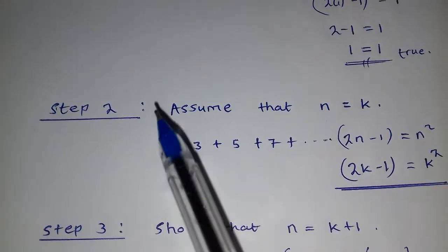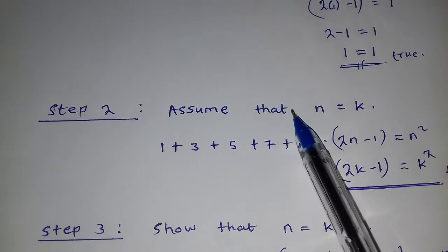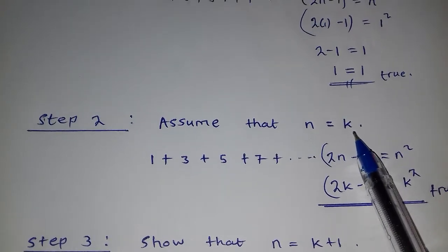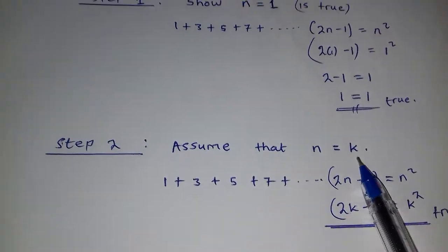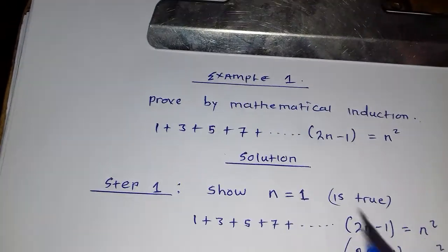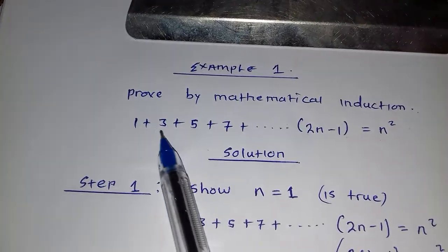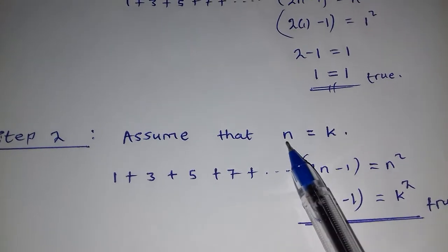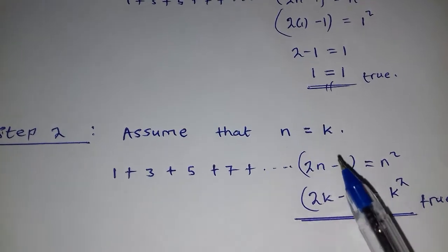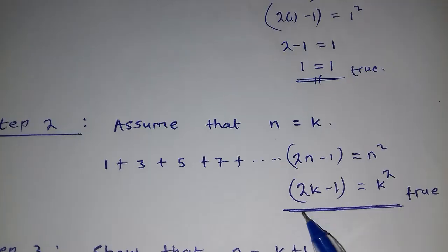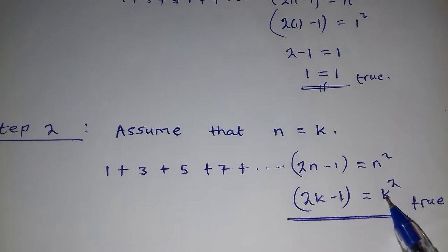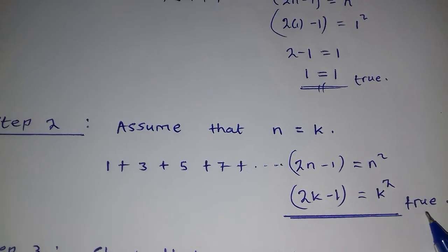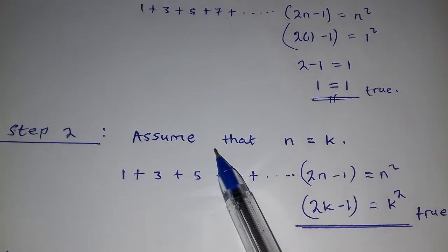Step number 2: assume that n is equal to k. This time around, we are not solving anything. We are just writing the same equation, replacing n with k. So we write: 1 plus 3 plus 5 plus ... plus (2k minus 1) is equal to k squared. We are assuming this is true.